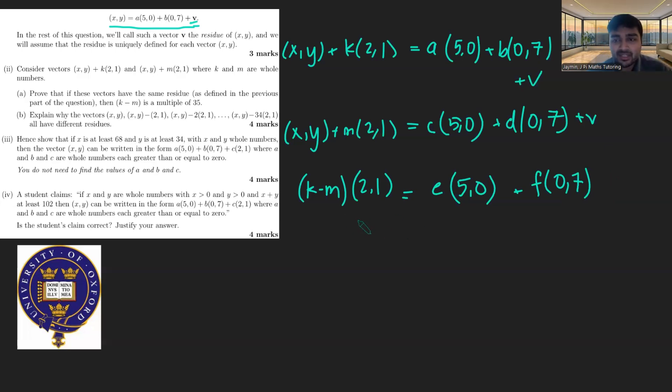So I get (k minus m) times (2,1) equals e times (5,0) plus f times (0,7). So if I just expand this out, I get 2(k minus m) equals 5e. So looking at the top components, and if I look at the bottom components, I get k minus m equals 7f. So this tells me that k minus m is a multiple of 5, and it must be a multiple of 7. And since they're co-prime, I get that k minus m must be a multiple of 35, so it equals 35z for some integer z.